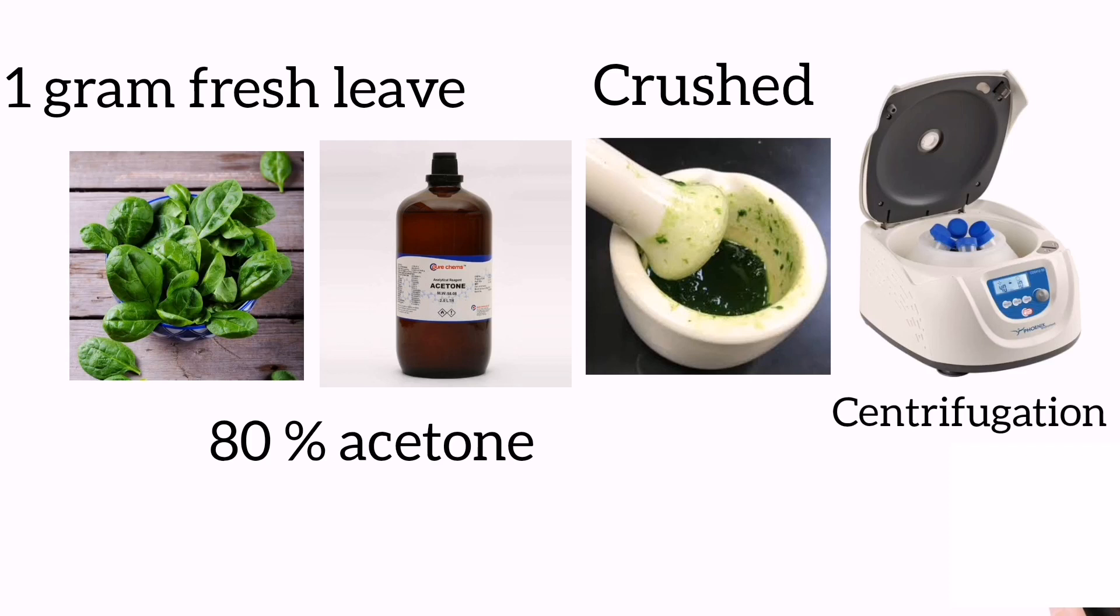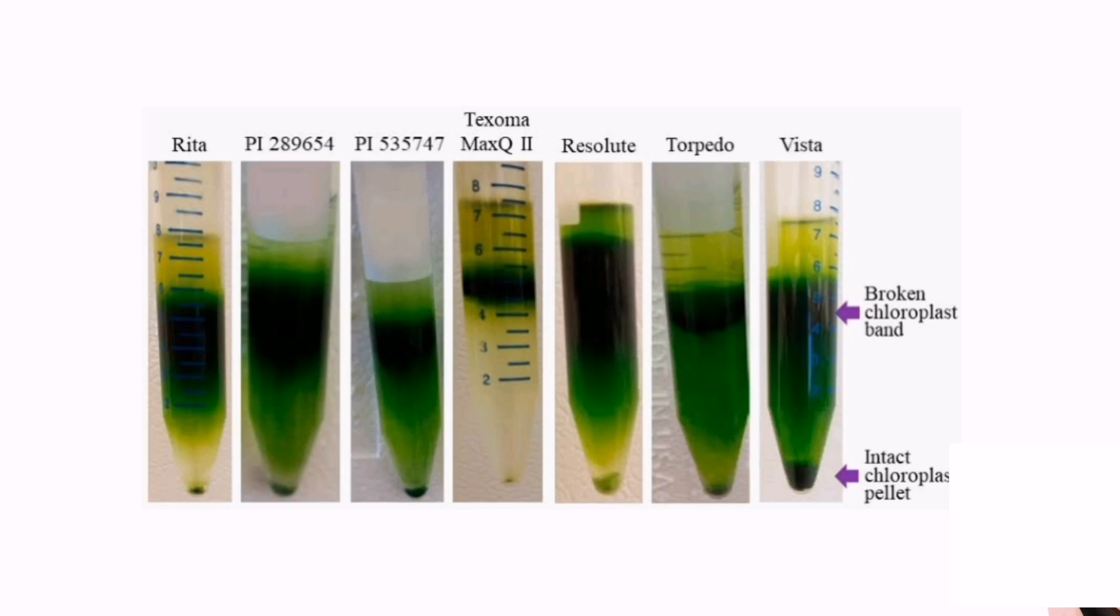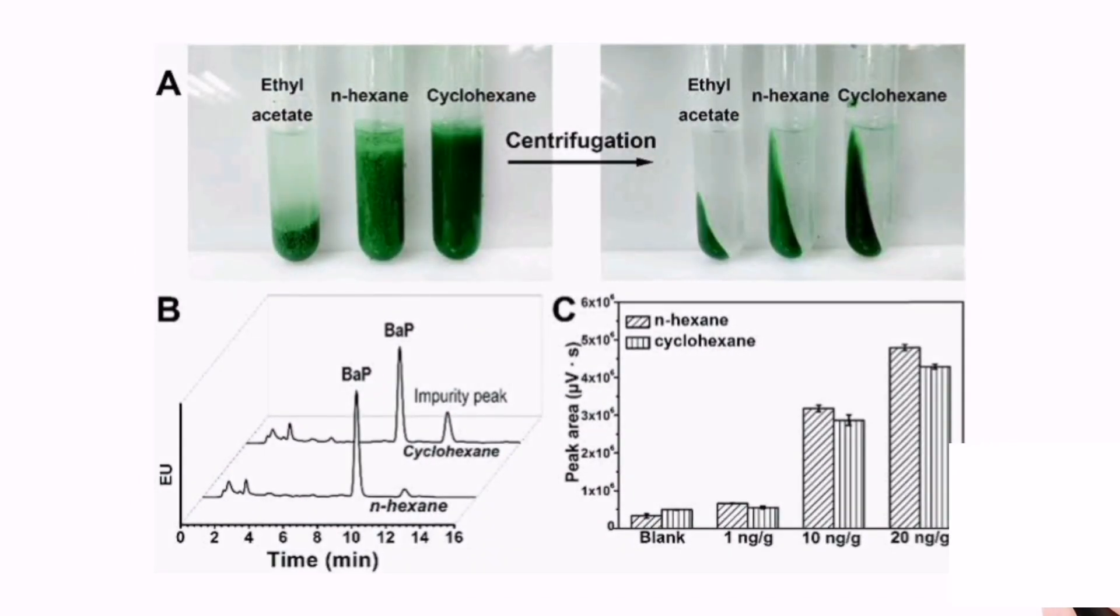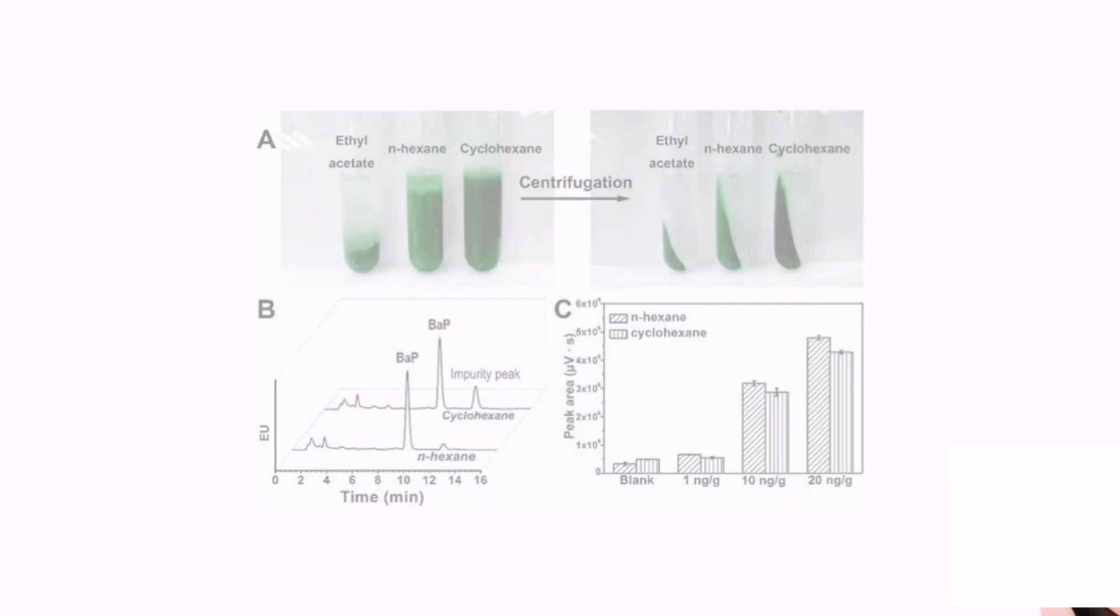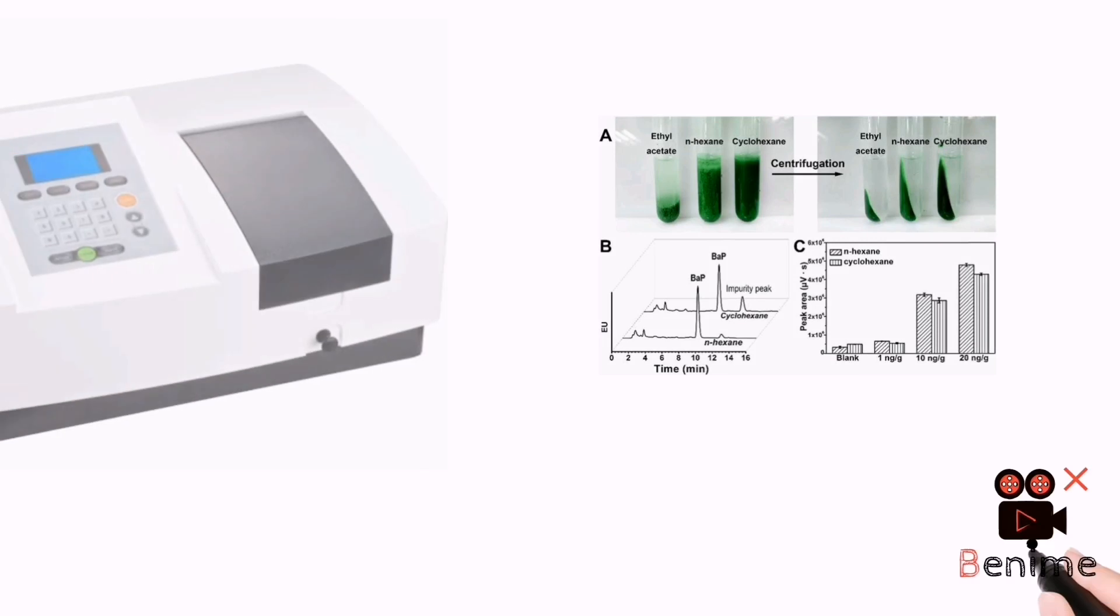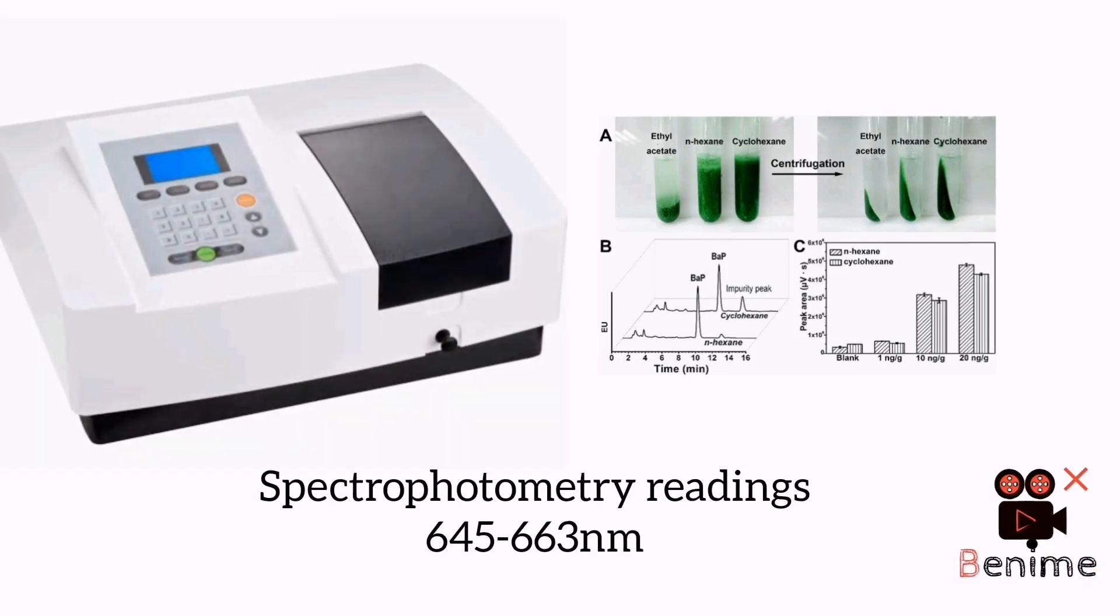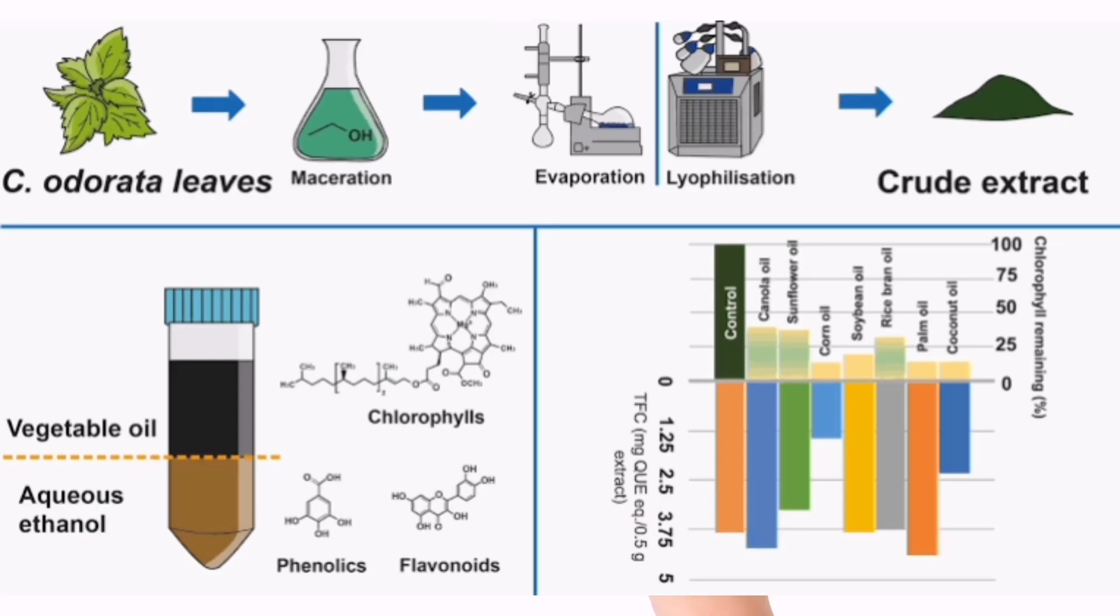It was then centrifuged at 5,000-10,000 revolutions per minute for 5 minutes. The supernatant was transferred and the procedure was repeated till the residue becomes colorless. The absorbance of the solution was read at 645 nm and 663 nm against the solvent, acetone, blank.